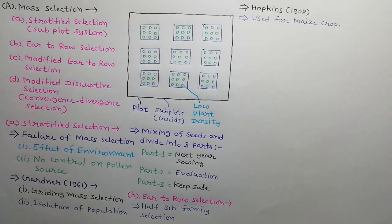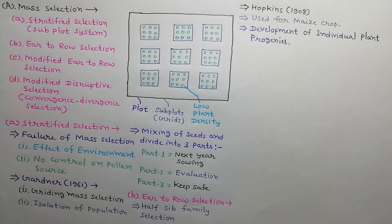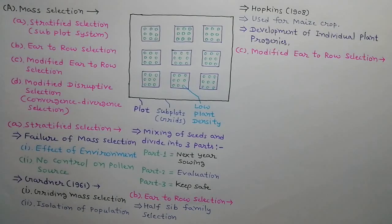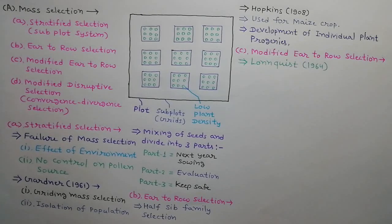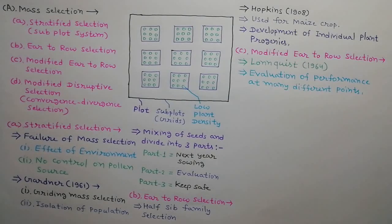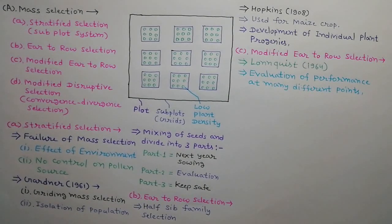In this modification, individual plant progenies are developed for two generations and then seeds of selected plants are mixed up as a mass. Third is modified year to row selection. This modification was developed by Lundquist in 1964. In this method, performance of selected progeny plants is evaluated at many points and then plants are selected upon the basis of average performance of all the points.